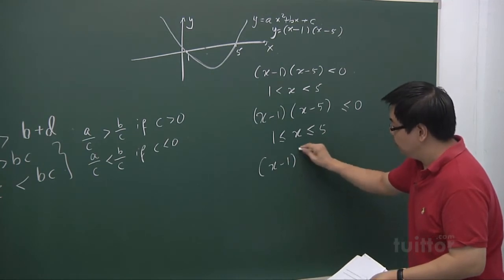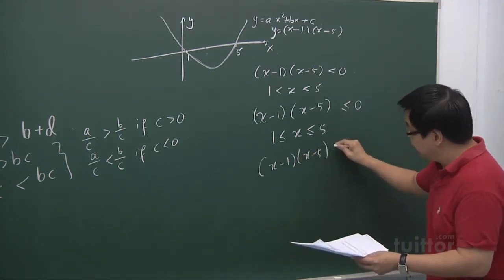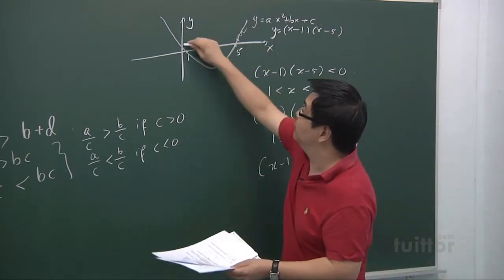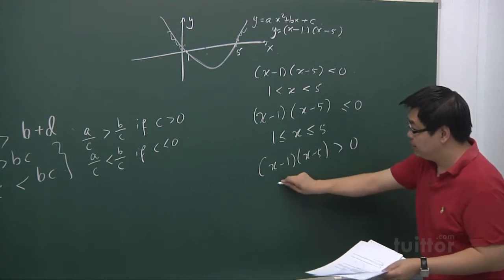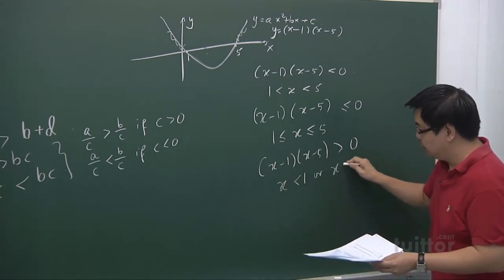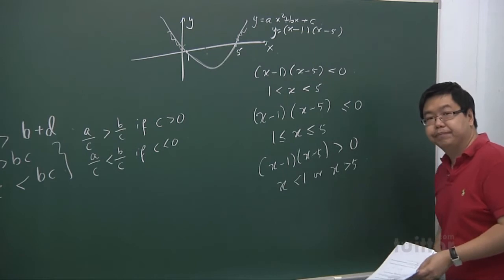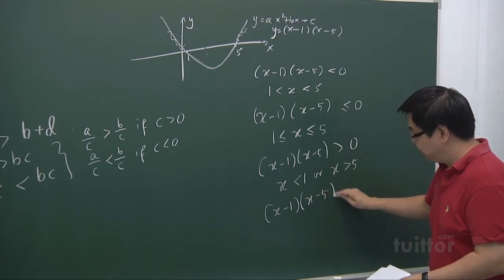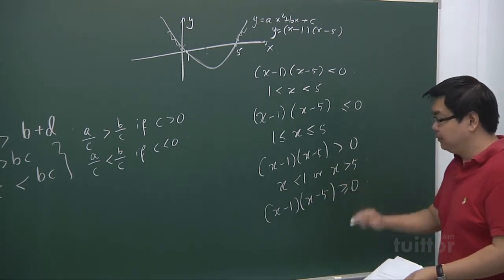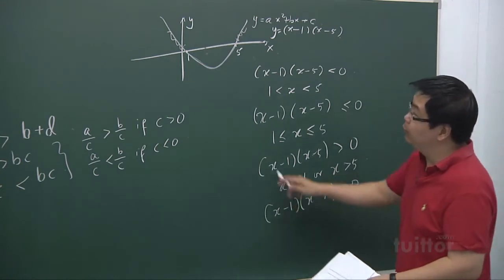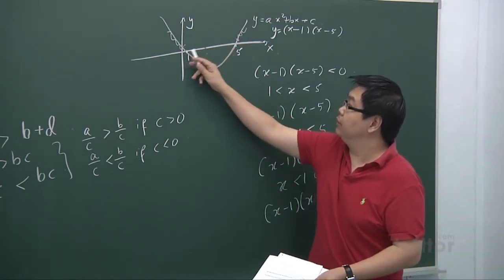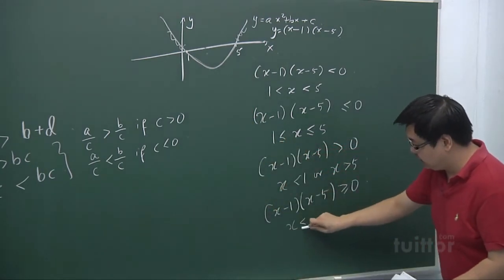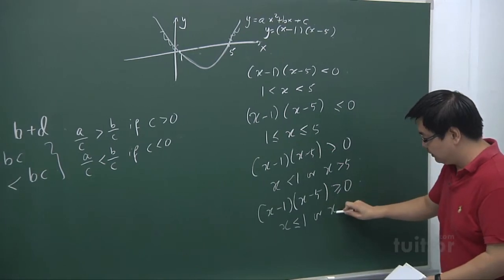Likewise, if you have (x−1)(x−5) > 0, that means we are looking at the part of the graph that is above the x-axis. So x is less than 1 or x is greater than 5.